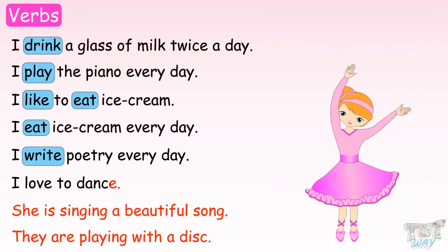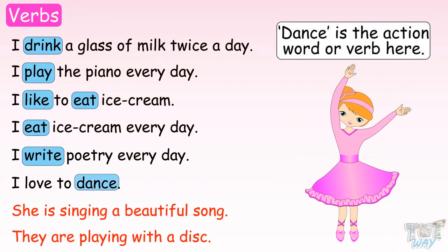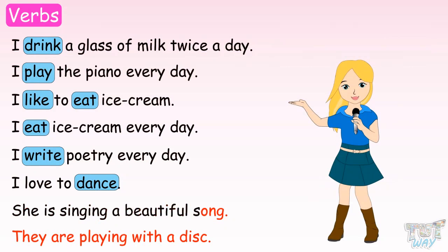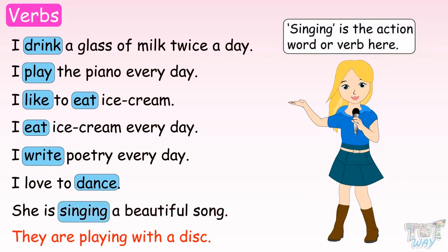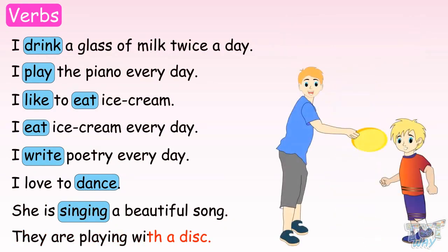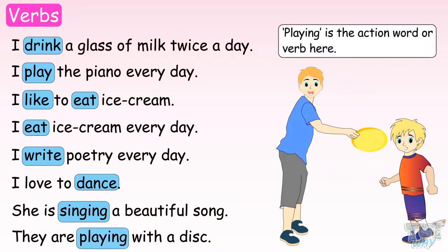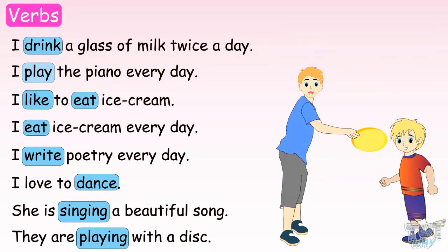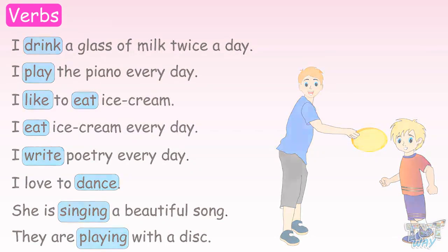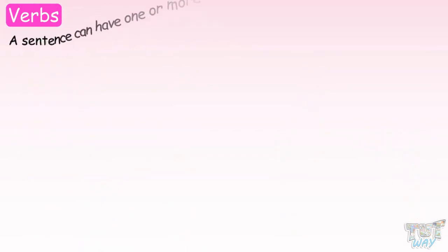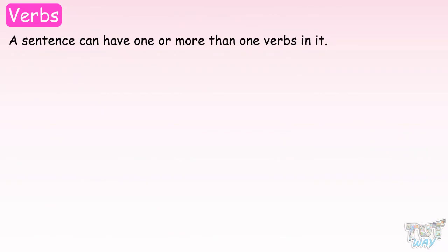I love to dance — dance is the action word or verb here. She is singing a beautiful song — singing is the action word or verb here. They are playing with a disc — playing is the action word or verb here. Drink, play, like, eat, write, dance, singing, dancing — all are action words or verbs. A sentence can have one or more than one verb in it.